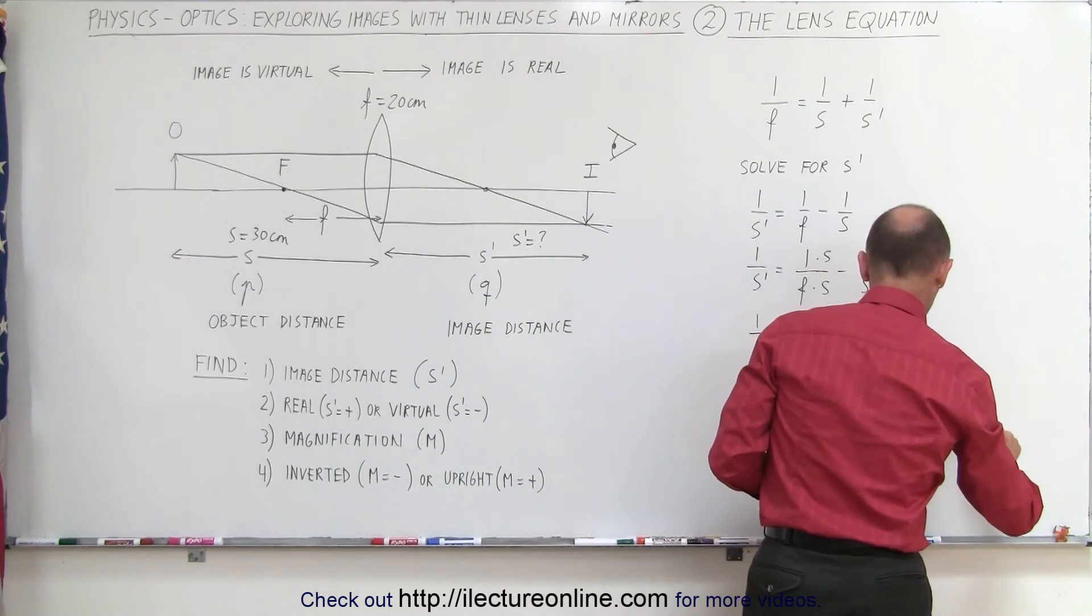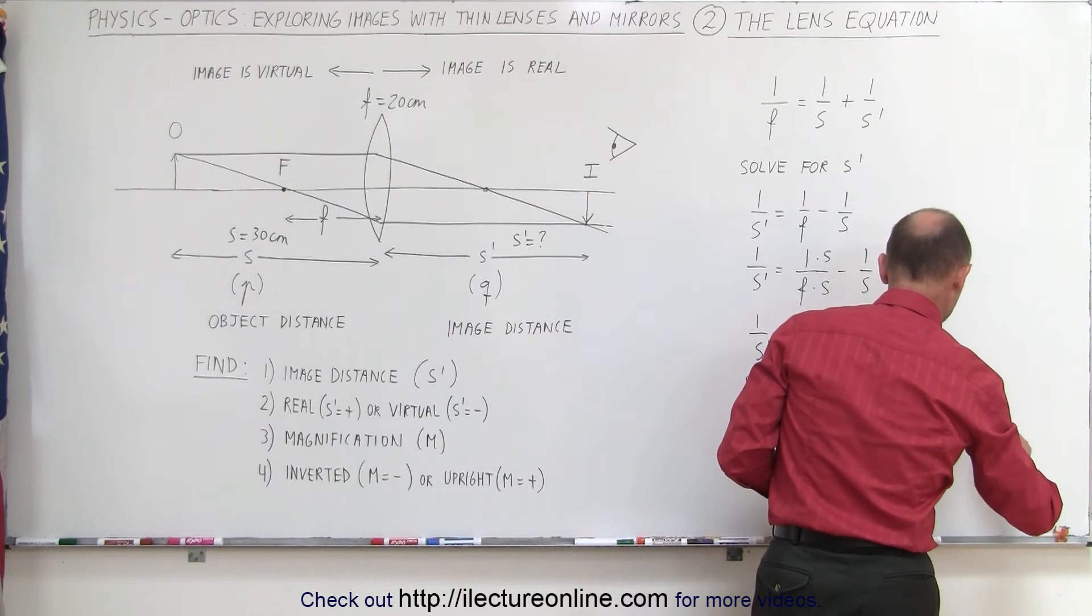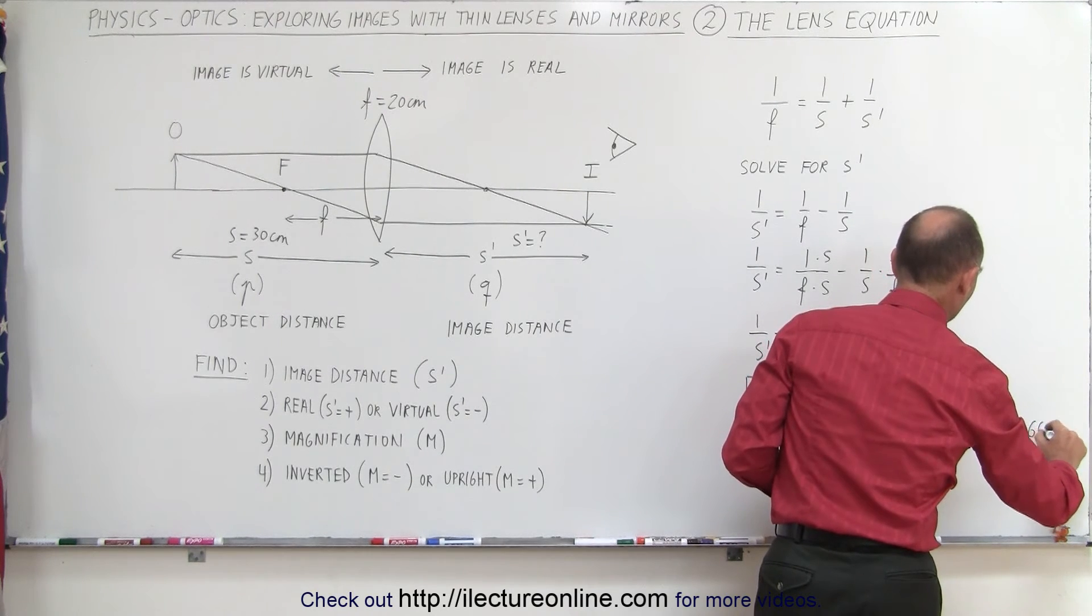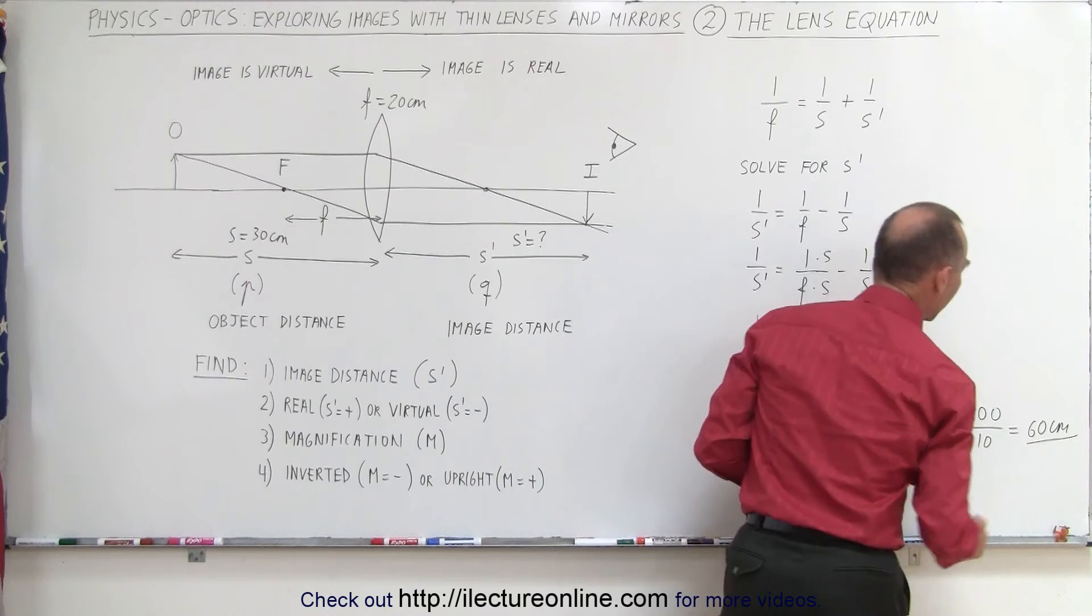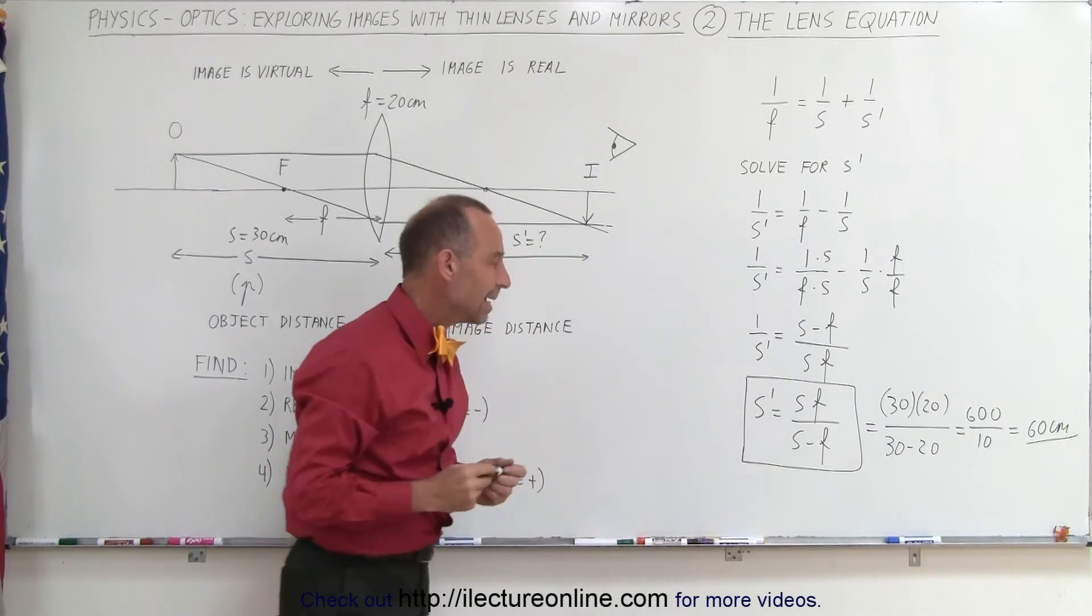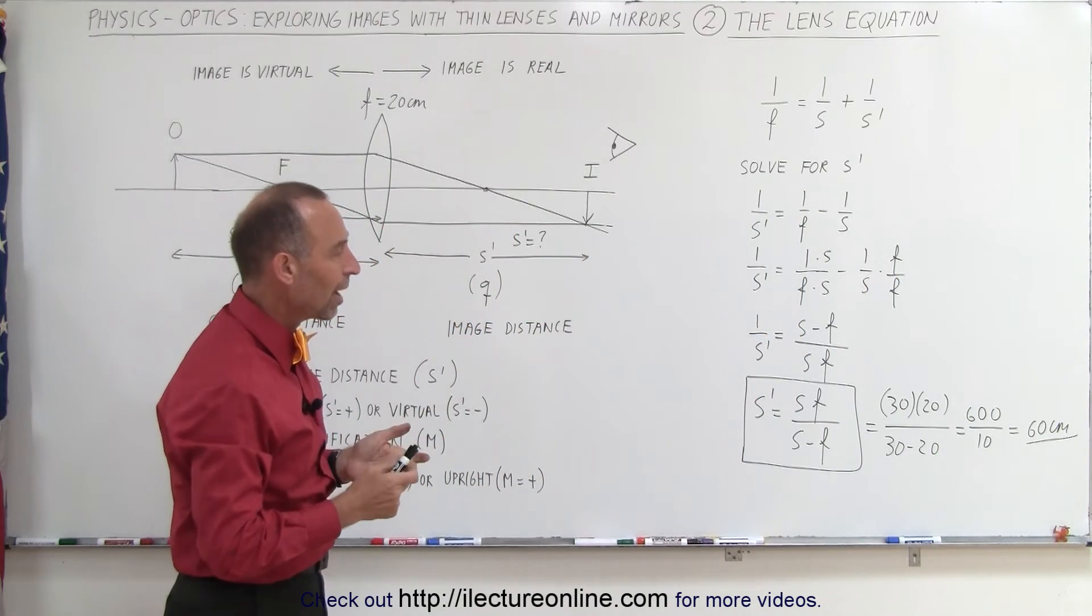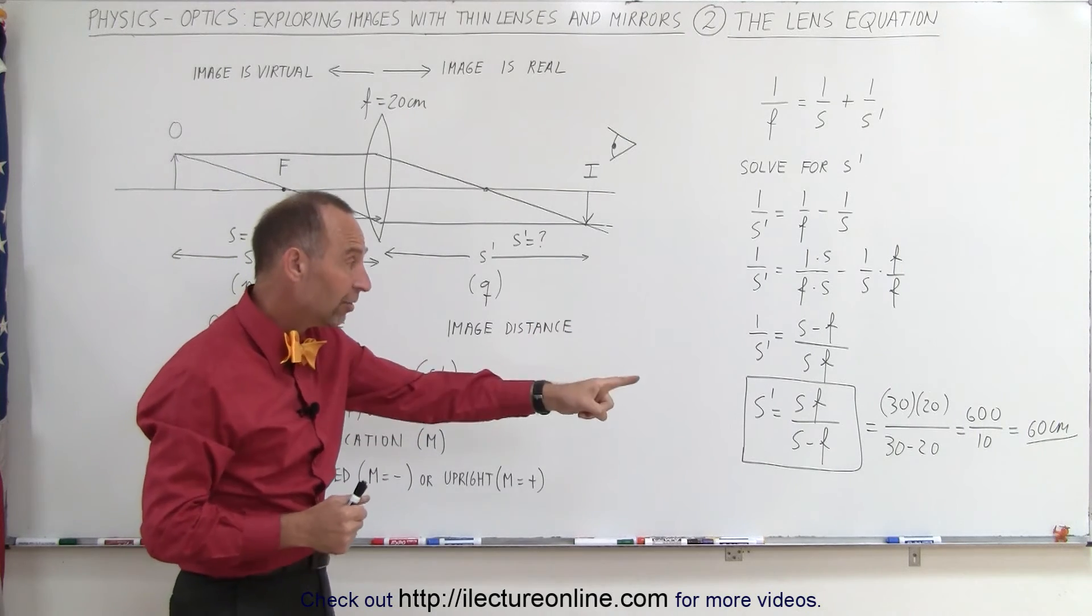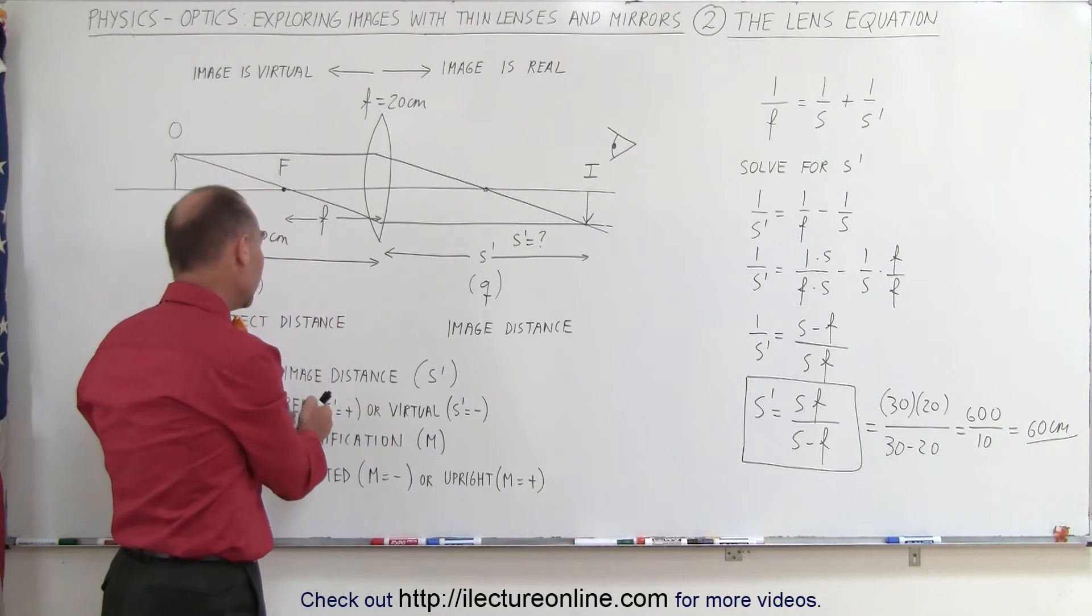This becomes equal to 600 divided by 10, which is 60. Of course, the units were centimeters. So the answer would be that the image distance S prime is 60 centimeters. Since it's positive, that means that it's a real image.